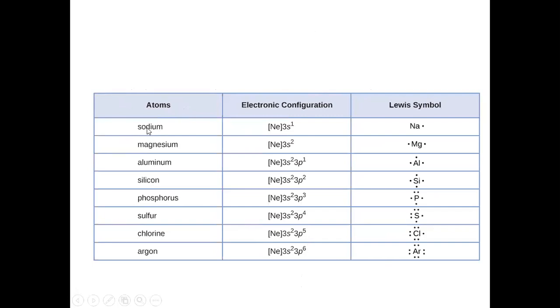Let's talk about sodium. Sodium has 11 electrons. If you distribute them, they will be 2, 8, and 1. So the configuration is 3s1. The outermost number, whatever number of electrons, is represented in the Lewis symbol.